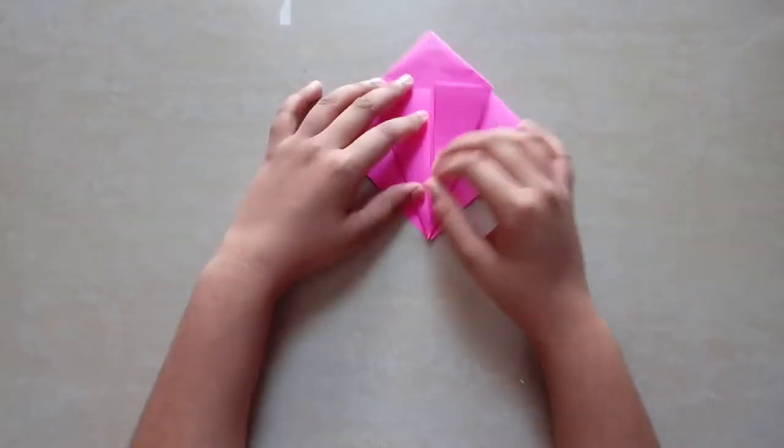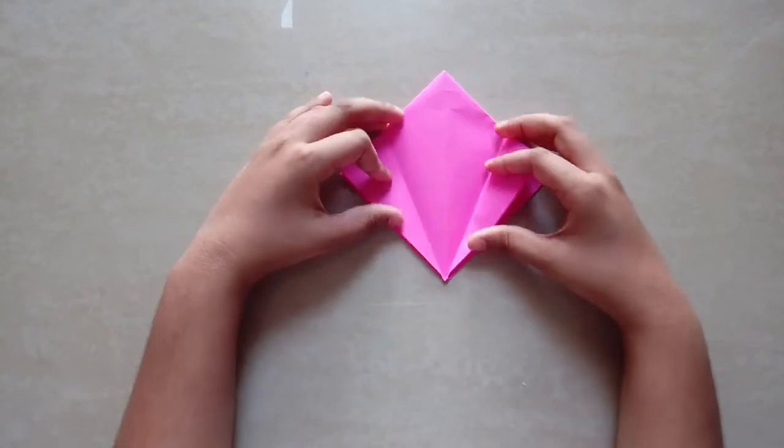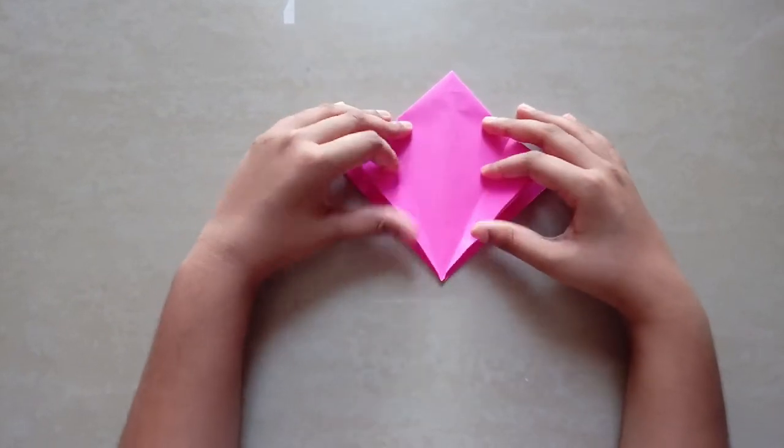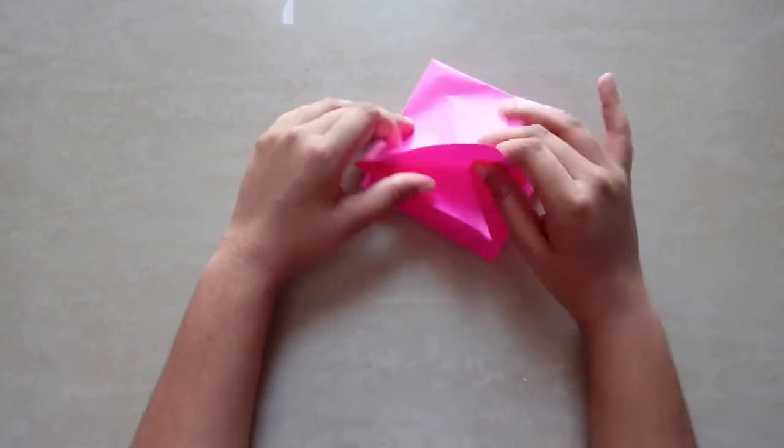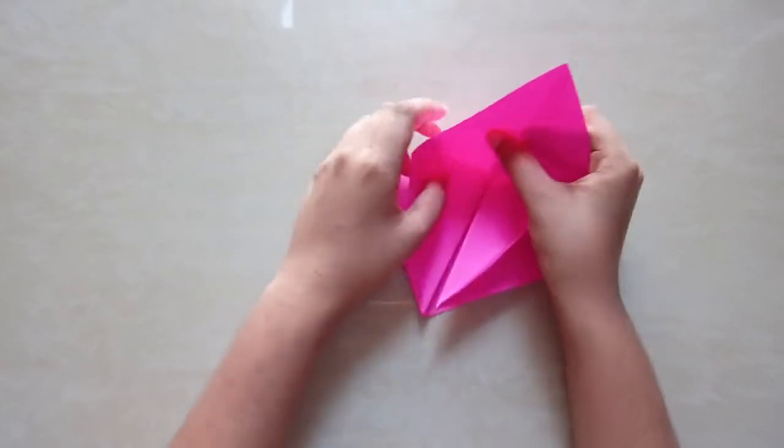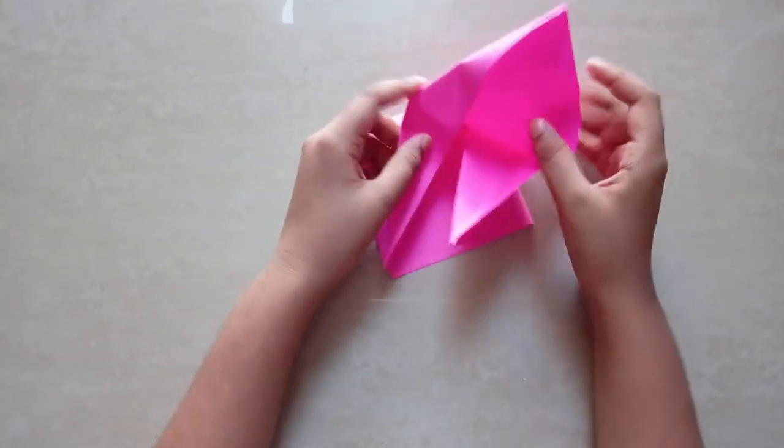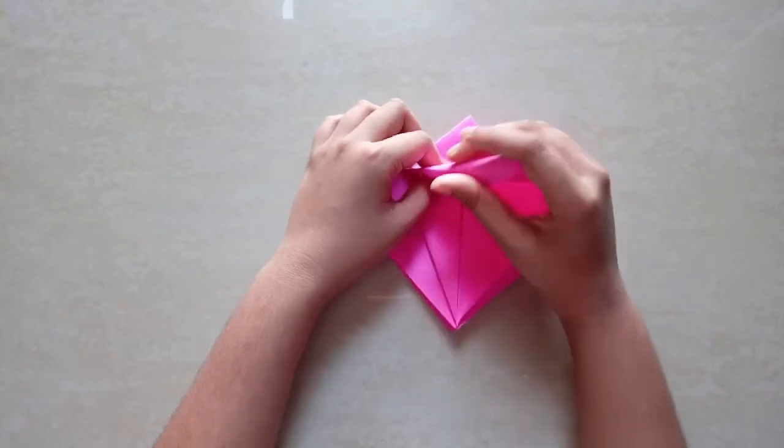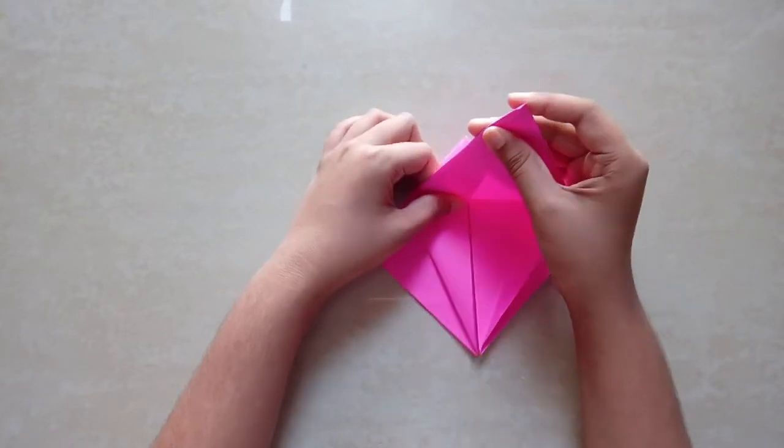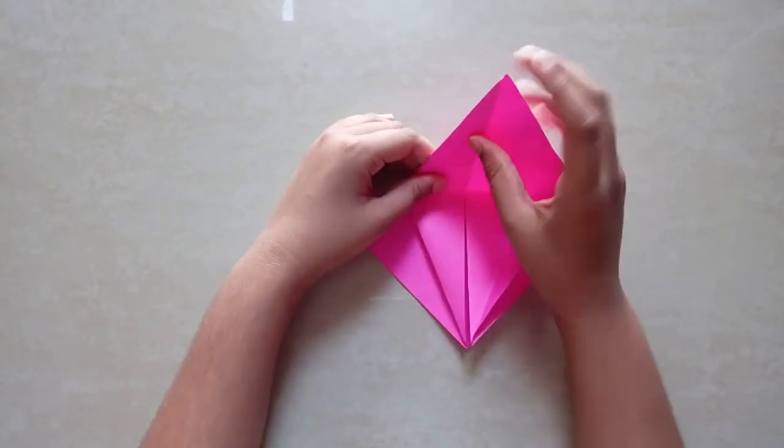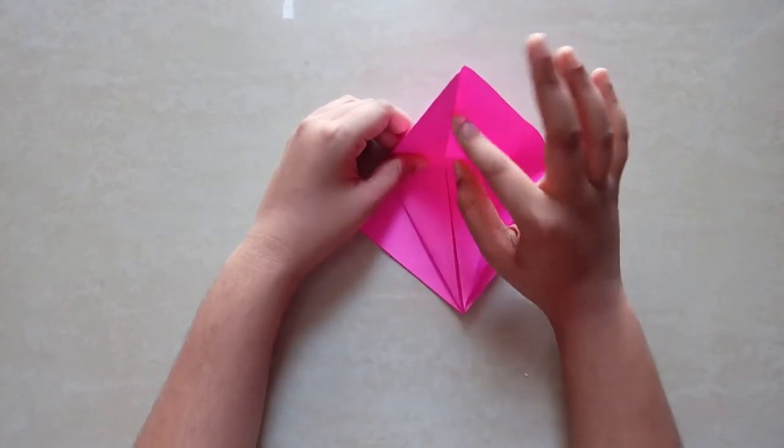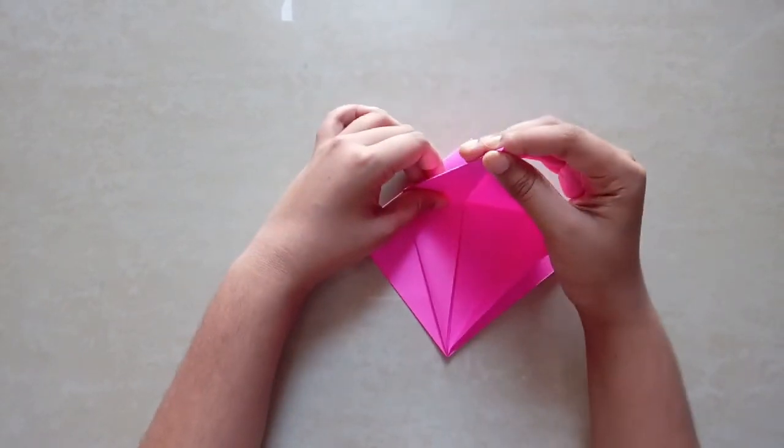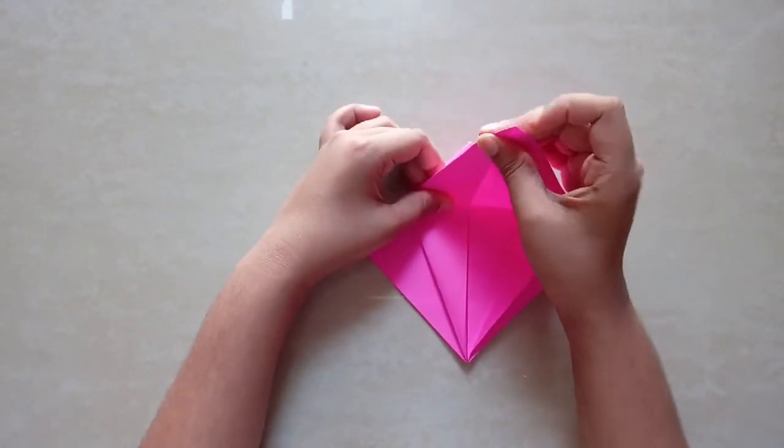Now open both of them and open this flap. You're gonna push this whole part inside like this, making sure that this whole line and this line are symmetrical. Press on the edges, this edge too.